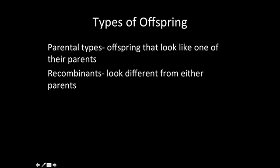There are different types of offspring when comparing to the parents. Parental types are offspring that look like one of the parents. So if the parent is gray with normal wings, an offspring that is gray with normal wings would be a parental type. Then there are recombinants — if both parents are gray with normal wings but you get an offspring that is black with vestigial wings, it looks like neither parent. We call it a recombinant. Offspring that look like parents are parental types; recombinants are those that don't look like either parent.